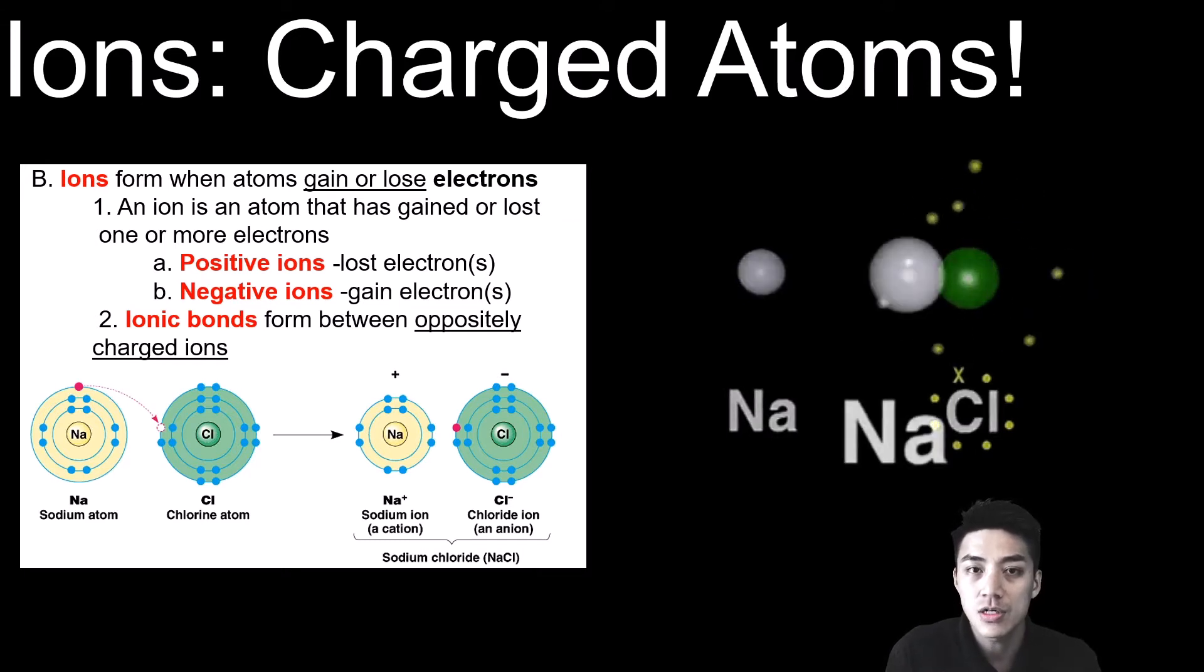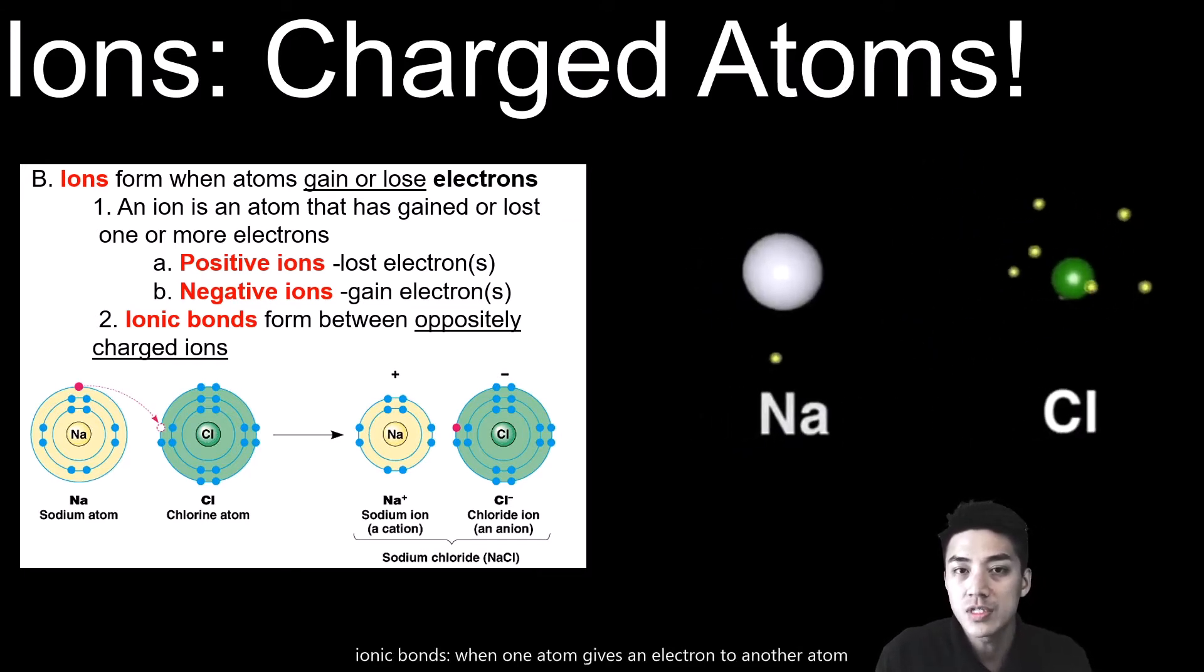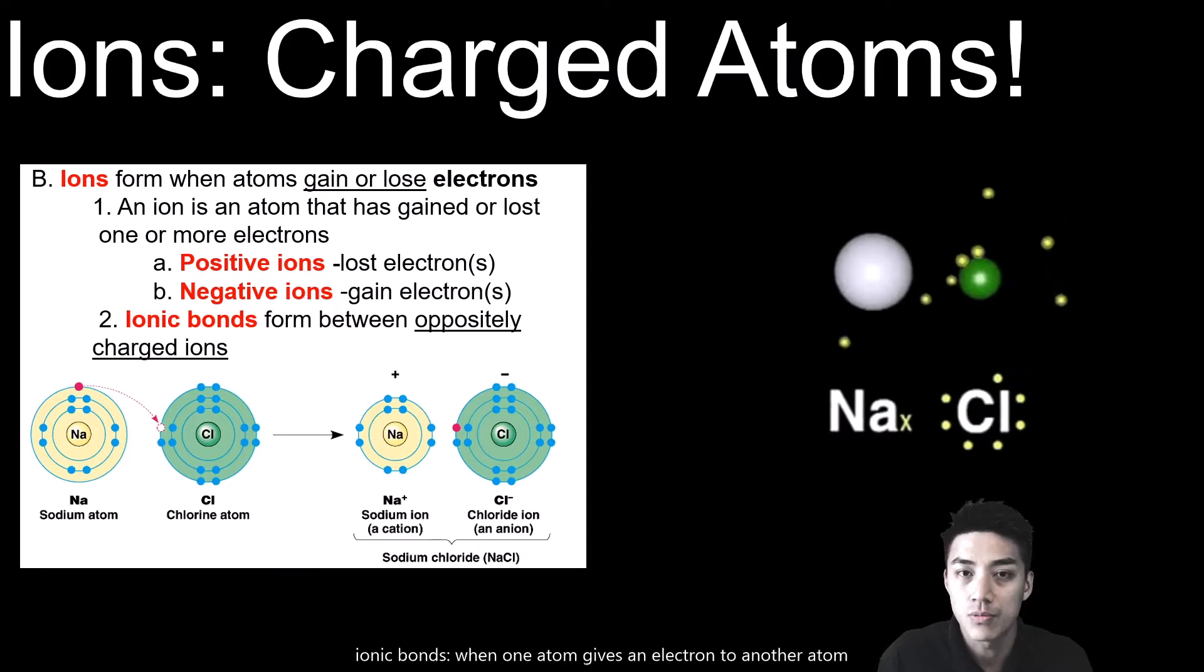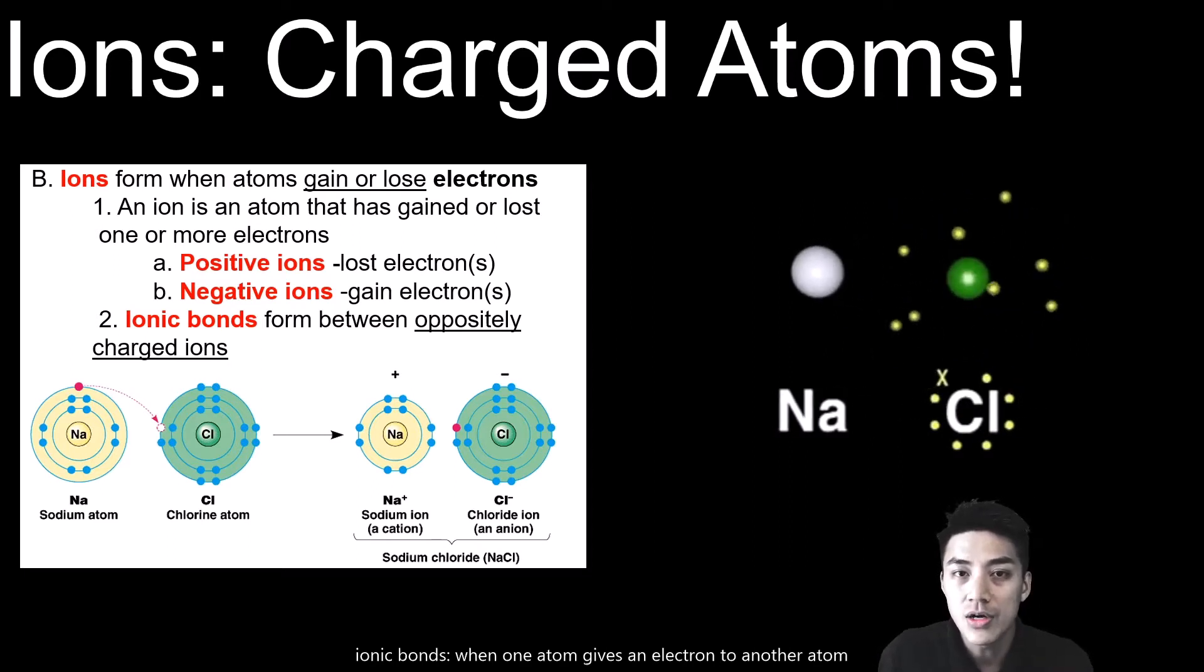You can see in the illustrations how sodium gives up one of its electrons to chlorine to form sodium chloride. Sodium has now become an ion, chlorine becomes an ion, and those two combine to form a compound we call salt.